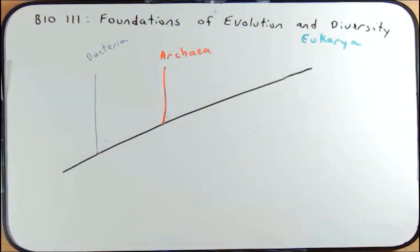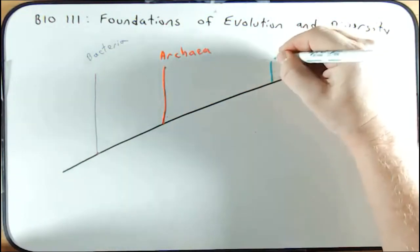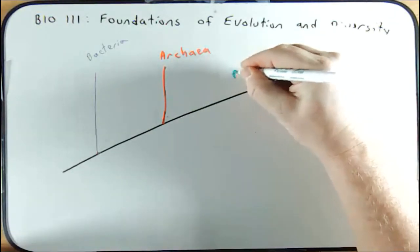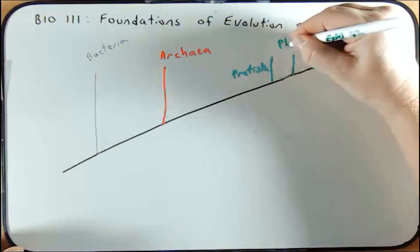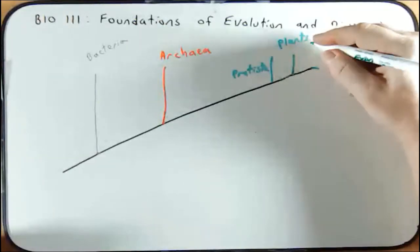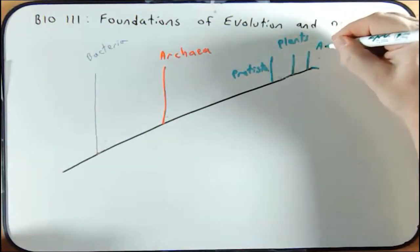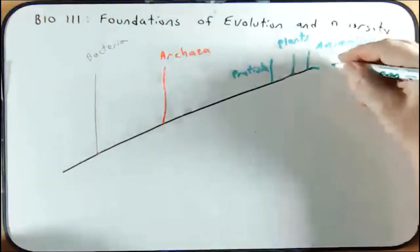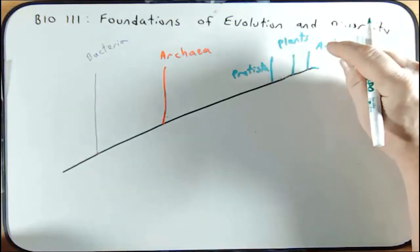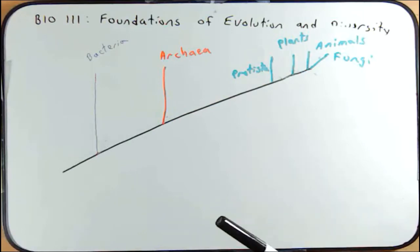Eukarya can be broken down into four different kingdoms. They're all still eukaryotes, but they're different kingdoms. The first I'm going to branch off here are the protista. Next, I'm going to branch off the plants. The third are animals, and the fourth kingdom are the fungi.